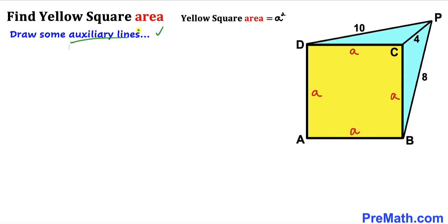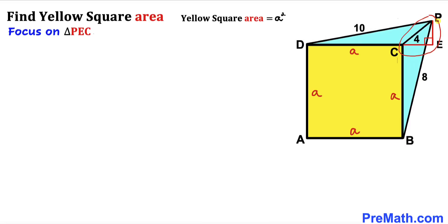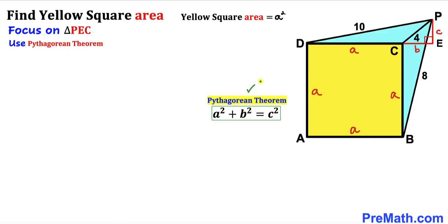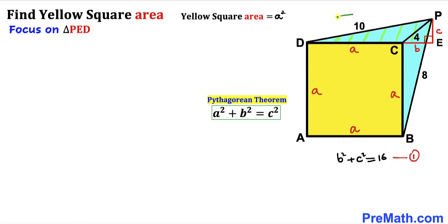We are going to draw some auxiliary lines. We have created perpendicular lines CE and EP. Now let's focus on right triangle PEC. Let's assume side length CE is lowercase b and PE is lowercase c. The triangle PEC has side lengths b, c, and 4. Applying the Pythagorean theorem — a² + b² = c² — we get b² + c² = 4², which equals 16. Let's call this equation number one.